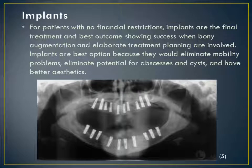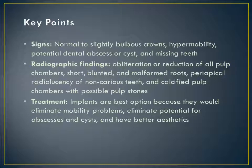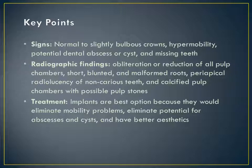Implants are the best option because they eliminate mobility problems, eliminate potential for abscess and cysts, and have better aesthetics. Key points: a clinician would see normal to slightly bulbous crowns, hypermobility, potential dental abscess or cysts, and missing teeth. Radiographic analysis shows obliteration or reduction of all pulp chambers, short blunted and malformed roots, periapical radiolucencies of non-carious teeth, and calcified pulp chambers with possible pulp stones.